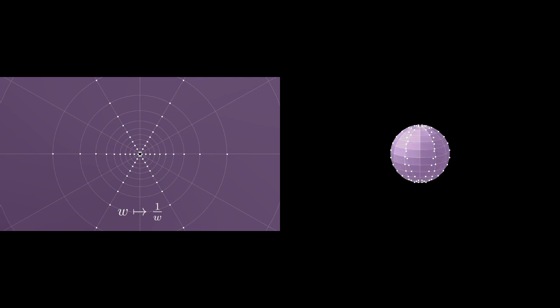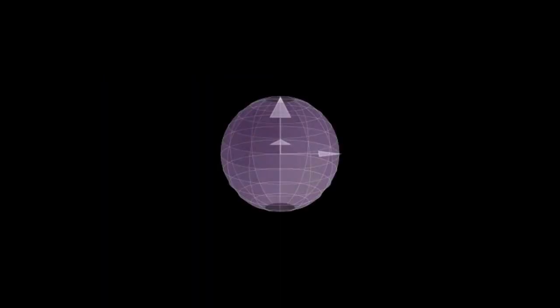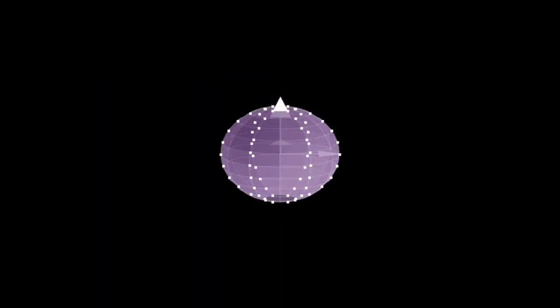Returning to the example where the complex map is w maps to 1 on w, we know how the transformation works on each point of the sphere except the north and south poles. Now we can fill these points in. Under the projection, the north pole corresponds to w equals infinity, while the south pole corresponds to w equals zero. Then the transformation w maps to 1 on w exchanges these two points. And this agrees with a half rotation about the x-axis.